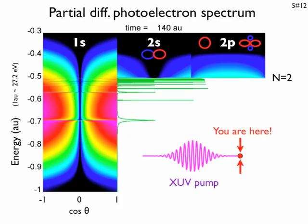Let us look at the photoelectron spectrum immediately after the XUV pulse. You see three columns. They correspond to the 1s, the 2s and the 2p ionization channels. On the y-axis, you have the total energy, and on the x-axis, you have the cosine of the ejection angle.